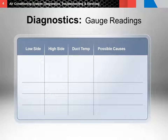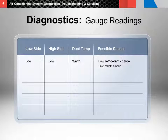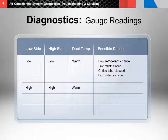Let's start with both the high and low side pressures being low and having a warm duct temperature. This could be caused by low refrigerant charge, the thermal expansion valve or TXV being stuck closed, the orifice tube being plugged, or high side restriction. High pressure readings on both sides with a warm duct temperature may indicate a refrigerant overcharge, while high readings on both gauges with a slightly cool duct temperature may be caused by overcharge or air in the system.